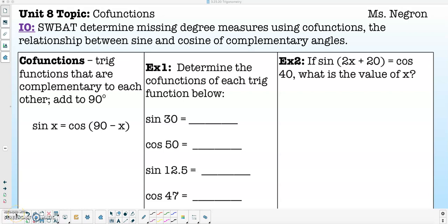Hey everybody, so today we're going to be talking about co-functions. This will help you determine the missing angle for either sine or cosine. Co-functions are trig functions that are complementary, which means that the angles are going to add together to equal 90 degrees.